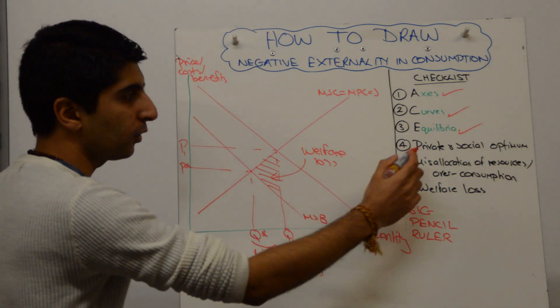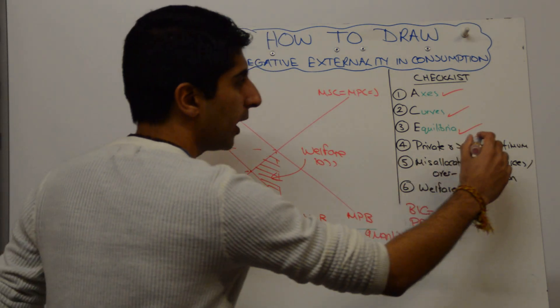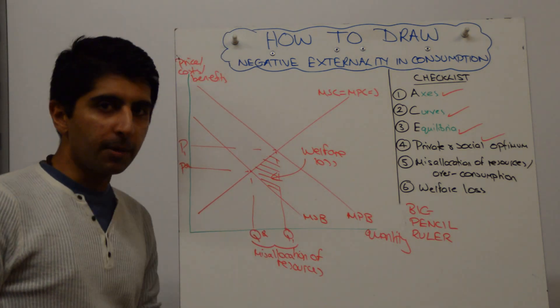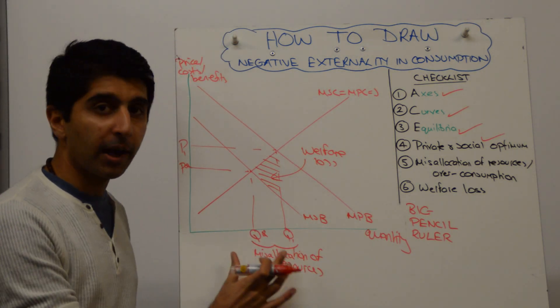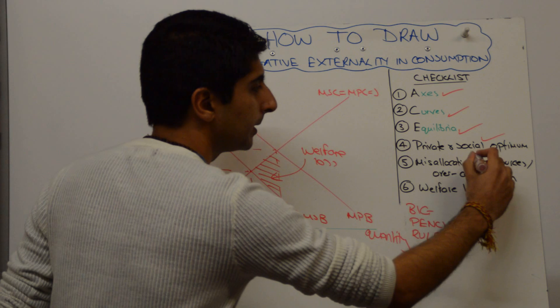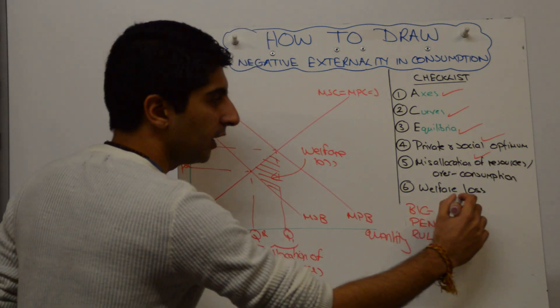Have we made it clear that the private and social optimum are different? Yes, we have made that clear. Have we labelled the misallocation of resources and made it clear to the examiner why the market failure lies? Yes, we have. Have we shown the welfare loss? Yes, we have.